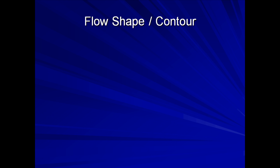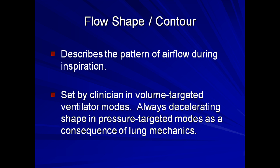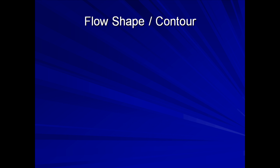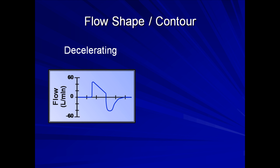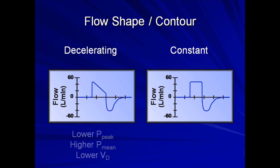The option of flow shape, sometimes referred to as flow contour, describes the pattern of airflow during inspiration. It is set by the clinician in volume-targeted ventilator modes and always has a decelerating shape in pressure-targeted modes as a consequence of lung mechanics. In modes in which it can be directly set, there are two common options: decelerating, in which flow is greatest at the beginning of inspiration and then steadily decreases; and constant, in which airflow is constant throughout inspiration. The difference is that decelerating flow results in a lower peak pressure, higher mean pressure, and lower dead space.